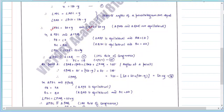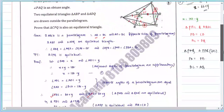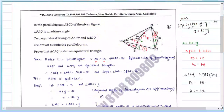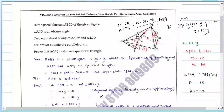So triangle PBC and triangle PAQ are congruent. From this, PQ equals PC. But PC equals CQ from the first pair of triangles. Therefore PC equals CQ equals PQ — triangle CPQ is an equilateral triangle.